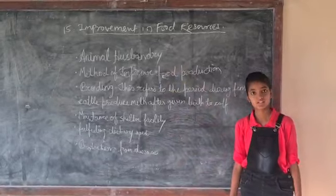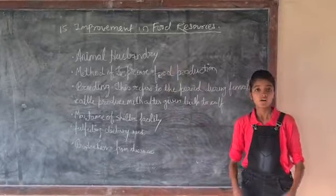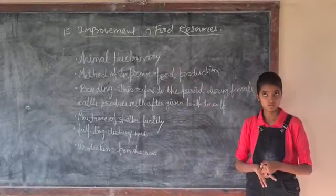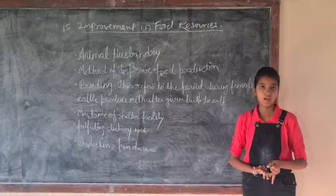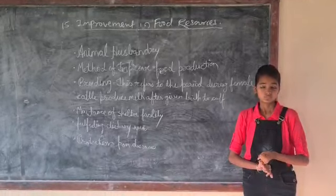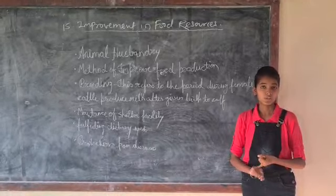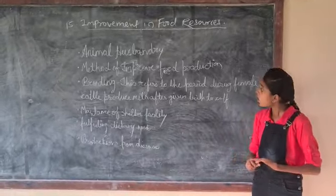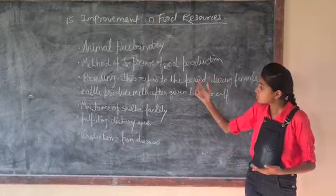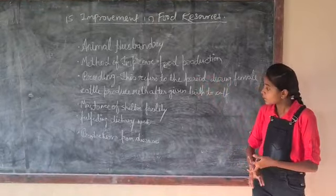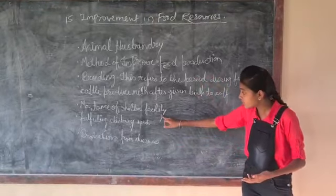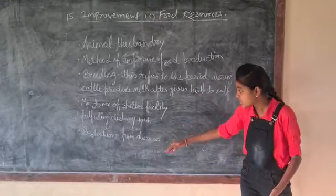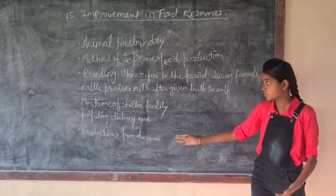Animal husbandry consists of fish production, poultry farming, bee keeping, and cattle farming. There are some methods of food production: first of all, breeding; maintenance of the shelter facility; fulfilling the dietary needs; and protection from diseases.